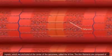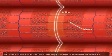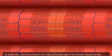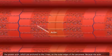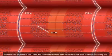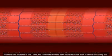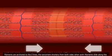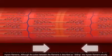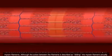The thick filaments are myosin, which are anchored at the center of the sarcomere called the M-line. The thin filaments are composed of the protein actin, which are anchored to the Z-lines on the outer edges of the sarcomere. Because the actin filaments are anchored to the Z-lines, the sarcomere shortens from both sides when actin filaments slide along the myosin filaments.